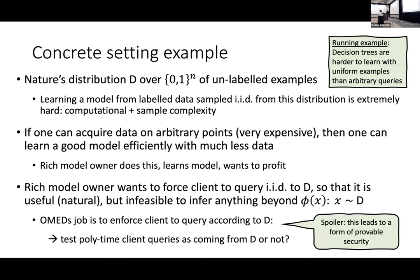In the concrete setting, there's a distribution from nature over unlabeled examples of n bits. Learning a model from labeled data sampled IID from this distribution is extremely hard — both computationally and in sample complexity. But if one can acquire data on arbitrary points, then one can learn a good model efficiently with far fewer queries. The goal of the defense is to force the client to query IID from the natural distribution, under which it would be hard to learn.